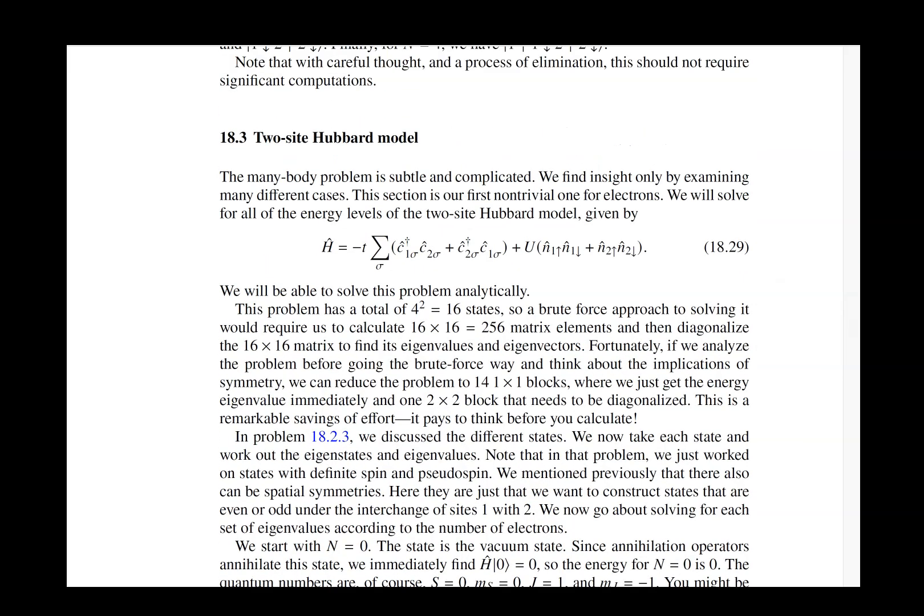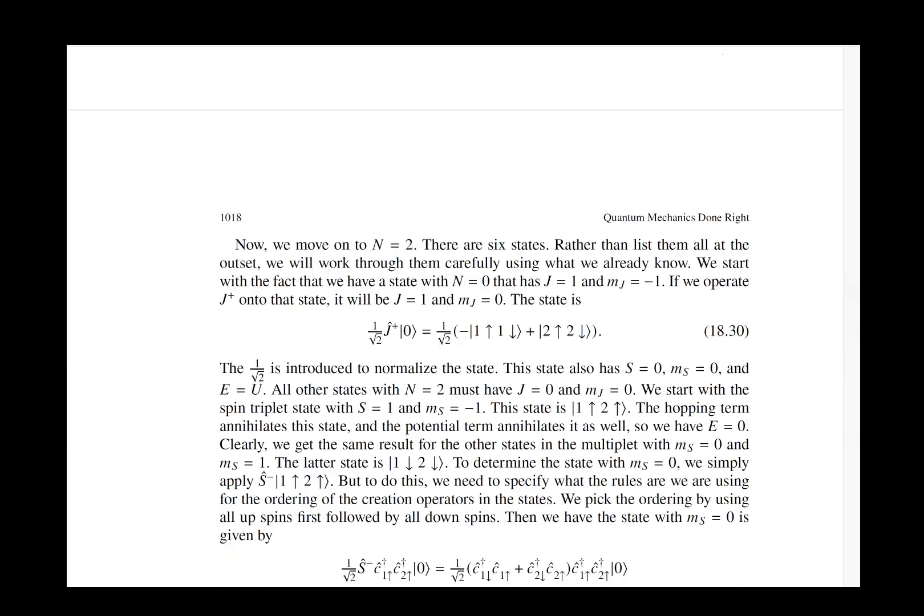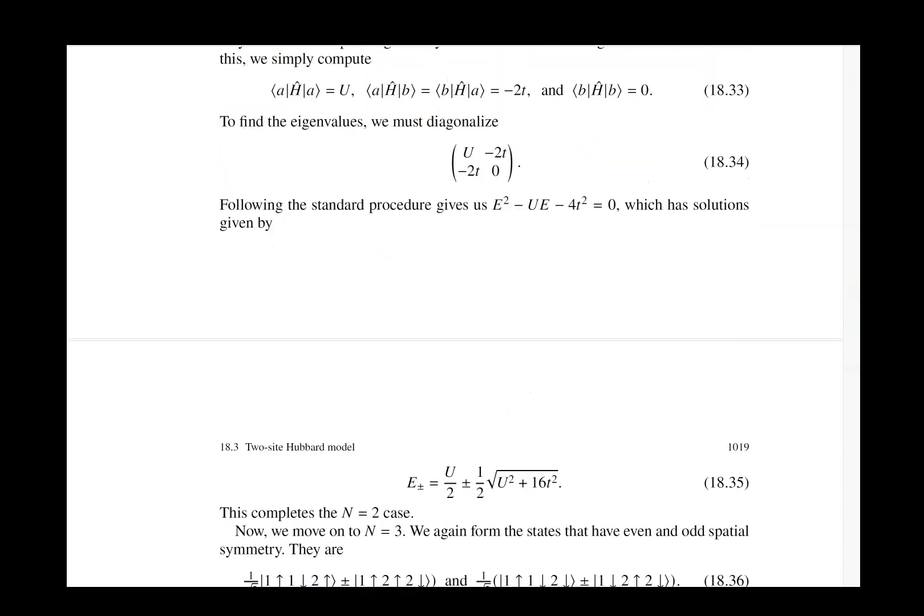Then we go into great detail and solve the two-site Hubbard model. This might sound simple, but it provides a lot of interesting results in how you can simplify things. You start with a system that has a 256 by 256 matrix, and you can reduce it down to at most solving a two-by-two matrix. It's pretty remarkable how you use symmetries to do this. We carefully explain how you can do that, so after completing this section, you can brag that you diagonalized by hand, analytically, a 256 by 256 matrix—pretty impressive.